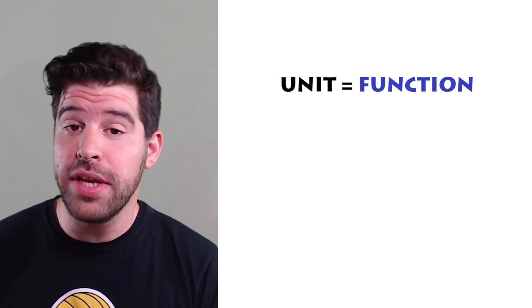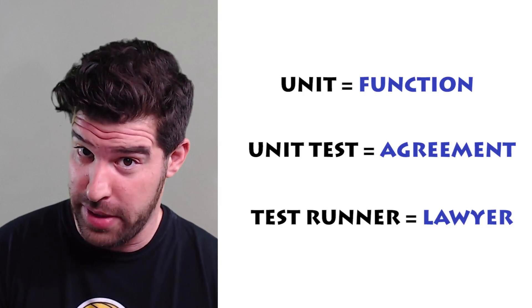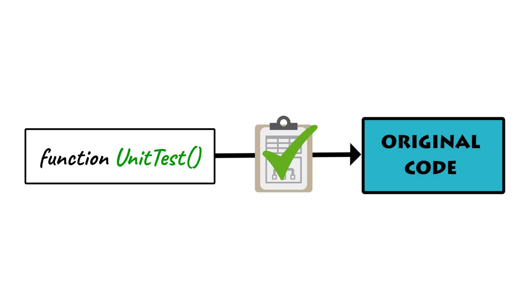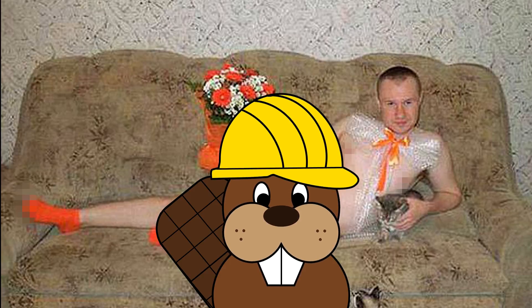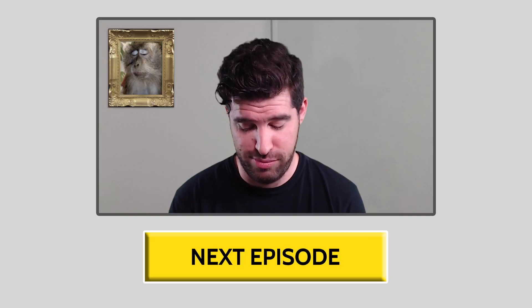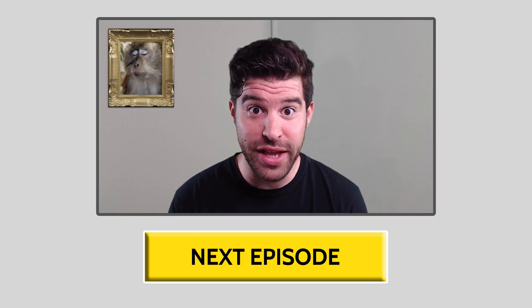So to sum things up: a unit is a function, a unit test is like a legal agreement, and a test runner makes sure you follow these agreements. But remember, it all comes down to this: a unit test is code that checks your other code! If you think you don't have time to test your code, the next episode is for you — trust me, you don't want to miss this one. See you on the next episode!